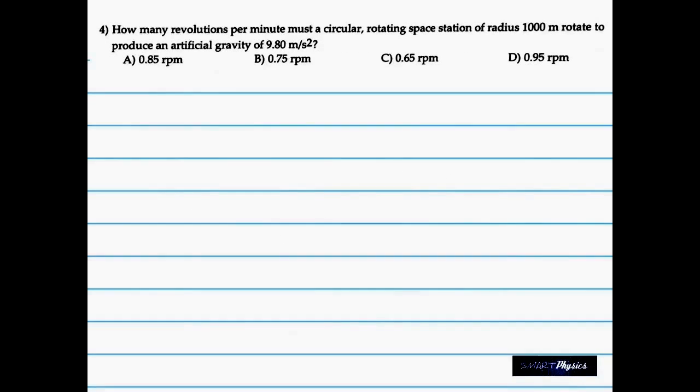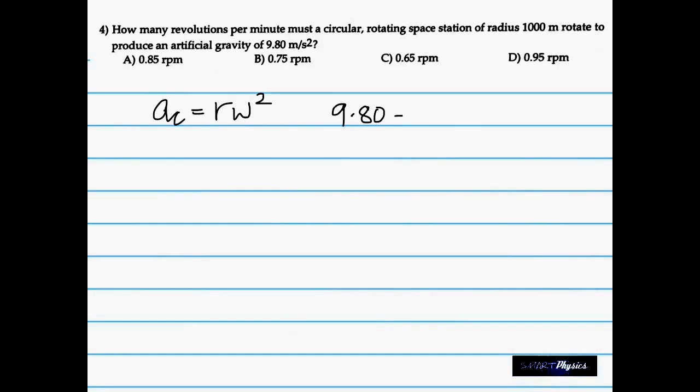It takes us to the fourth. It says, how many revolutions per minute must a circular rotating space station of radius 1000 meter rotate to produce an artificial gravity of 9.80 meter per second squared? You know, the gravity is created because of the rotational motion and the force or the acceleration in rotational motion is called the centripetal acceleration. We know the formula for centripetal acceleration. We've used it one time before. It's R ω².